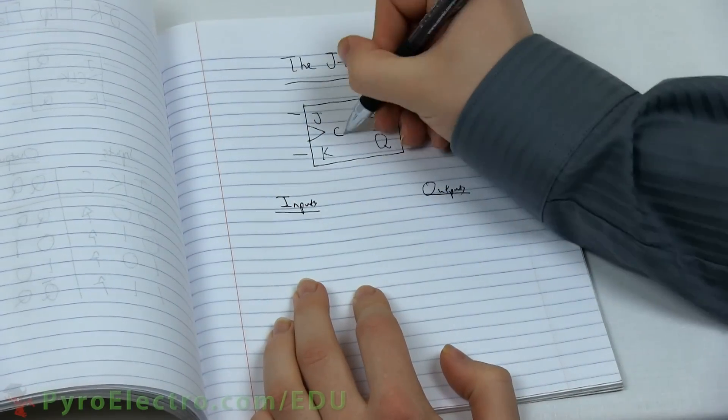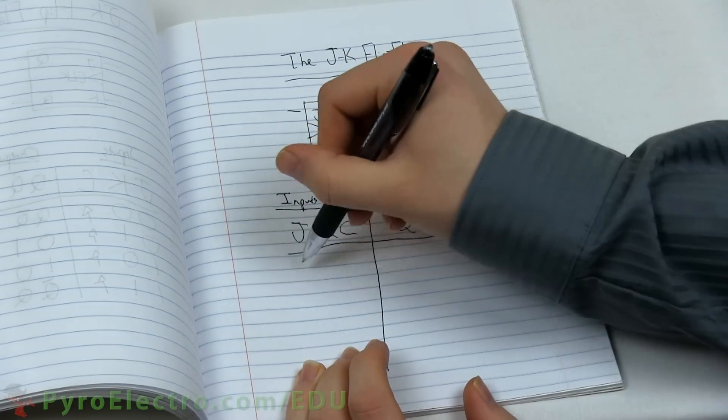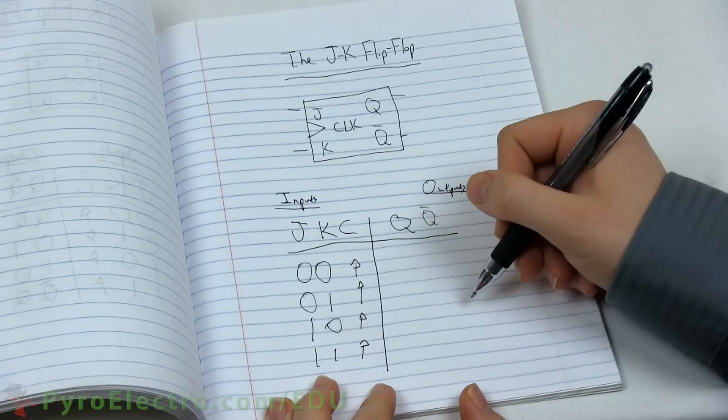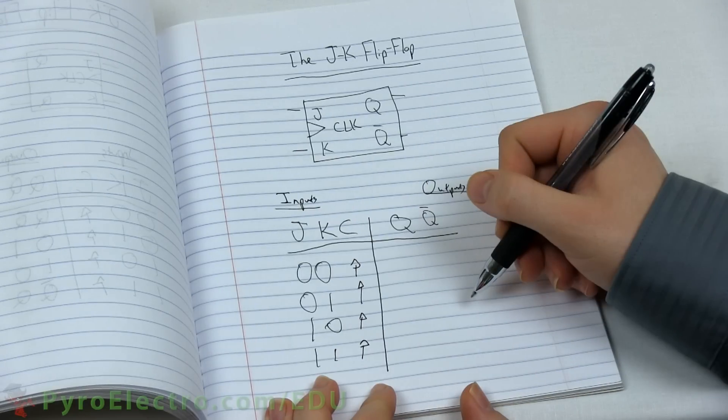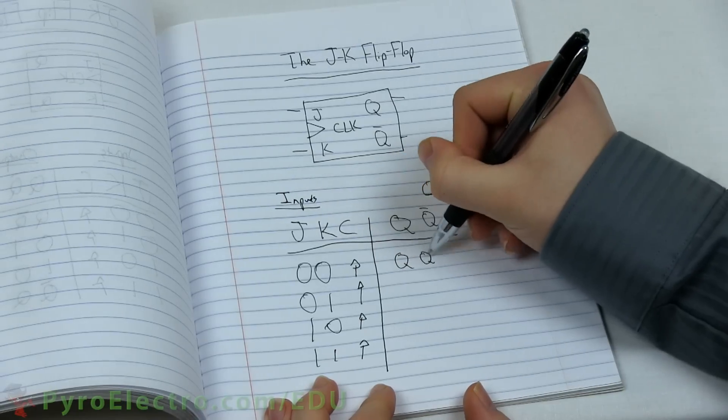The truth table for this flip-flop is a little tricky, but let's go through it. The first line shows when J and K are 0 and when the clock changes from logic 0 to logic 1. This is called a positive edge transition. The output should be whatever it already is.